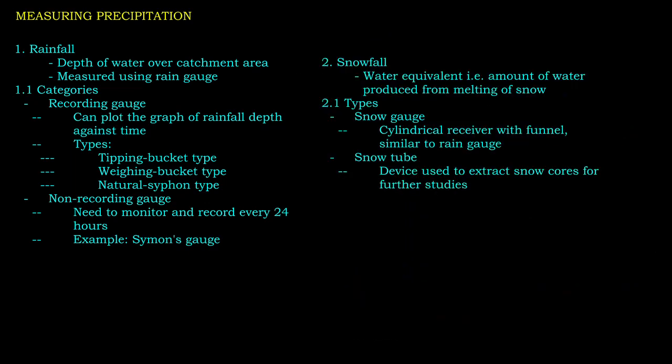The measurement of snowfall is expressed as equivalent water depth, which is defined as the amount of water produced from the melting of a unit of snow. Water equivalent of snow is measured using snow gauges and snow tubes. The snow gauge measures either the weight or volume of melted snow to determine its water equivalent.